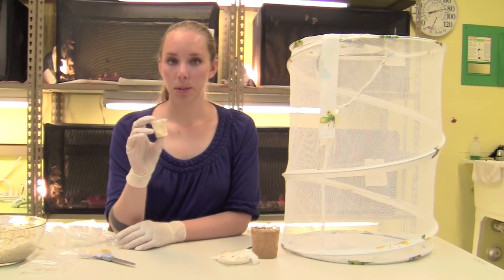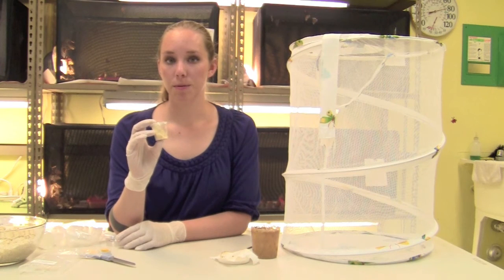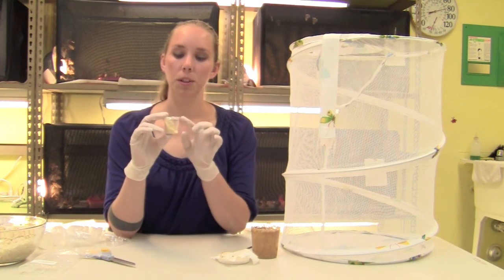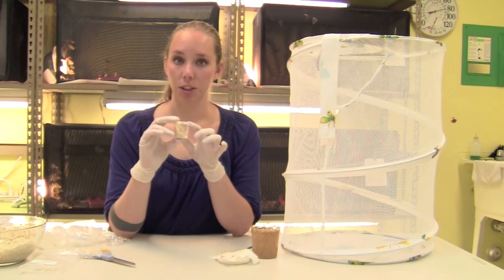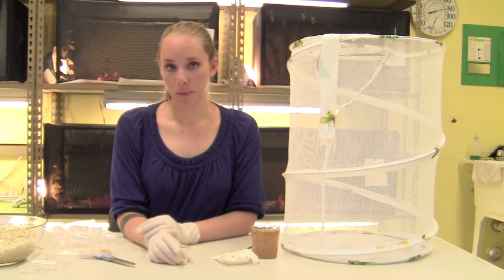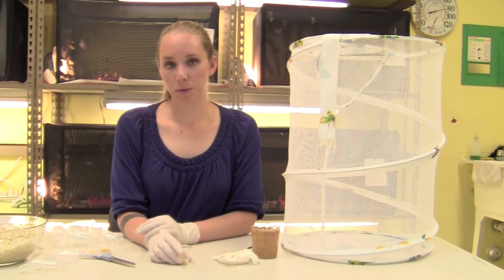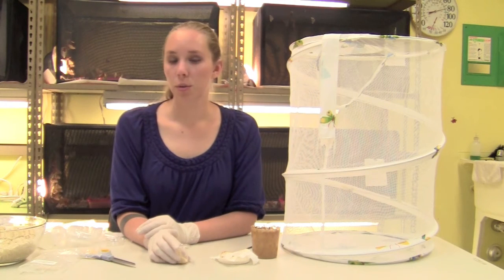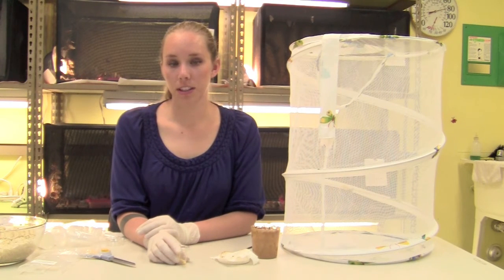Once you've put all the larvae into the cups, it'll take about two weeks before they form chrysalids. They'll move to the top of the cup and attach to the plastic lid. When all the chrysalids have formed, wait about 24 hours before putting them into the cage. You want to give them this time to ensure that the chrysalids have time to harden.